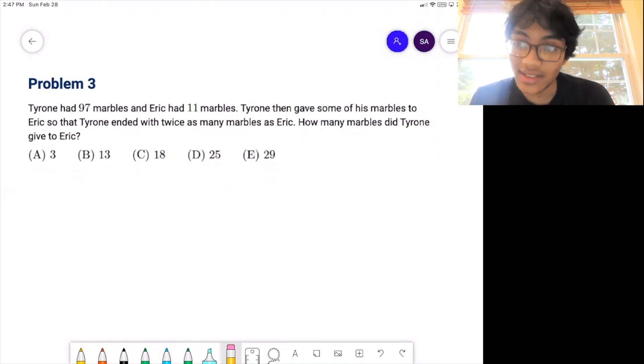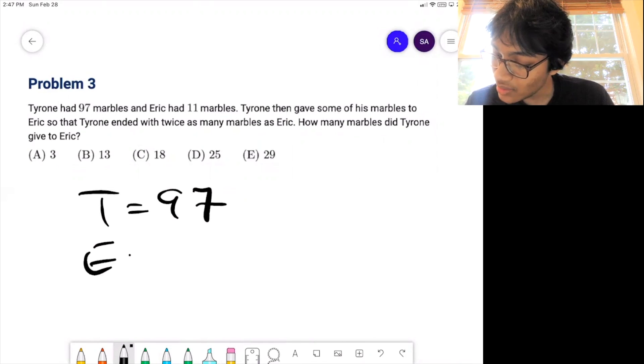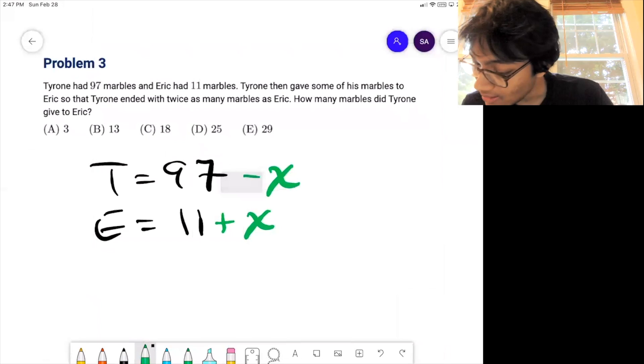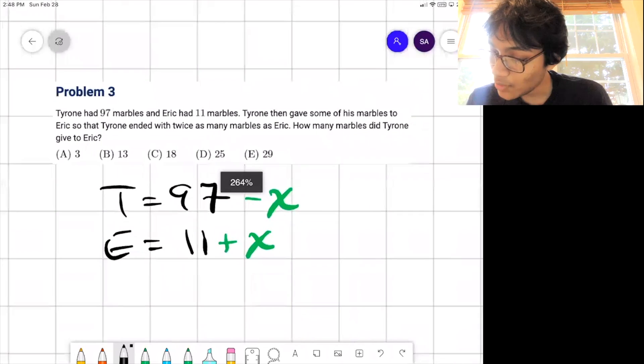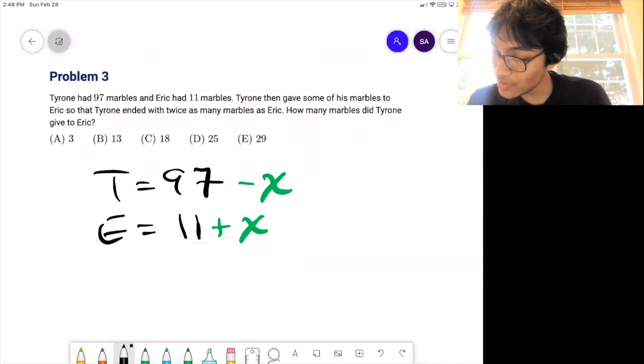Alright, so Tyrone is apparently a very nice guy. He had 97 marbles, and Eric only had 11. So this guy Tyrone decided to give some of his marbles away, so Eric had some more. How much more? Well, the problem tells us. We know that Tyrone ended up with twice as many marbles as Eric after he gave some away.